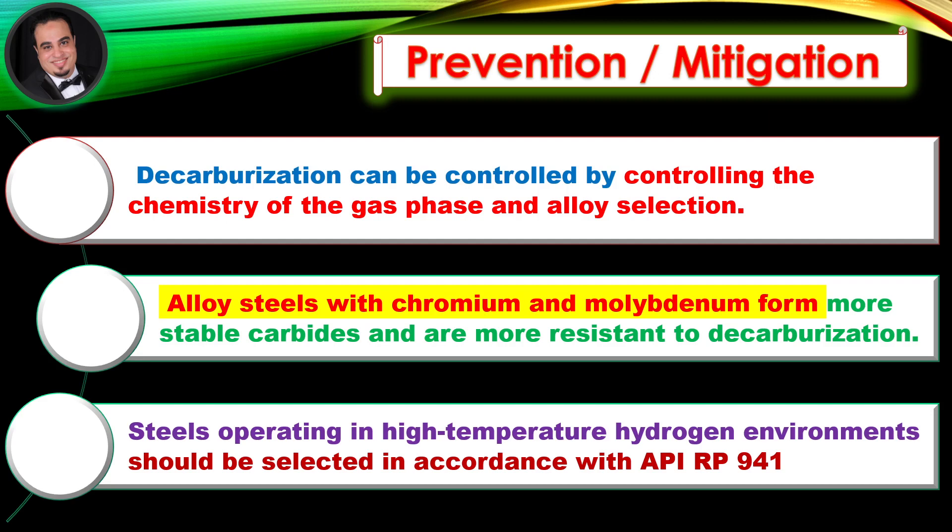Prevention and mitigation: Decarburization can be controlled by controlling the chemistry of the gas phase and alloy selection. Alloy steels with chromium and molybdenum form more stable carbides and are more resistant to decarburization. Steels operating in high-temperature hydrogen environments should be selected in accordance with API RP 941.